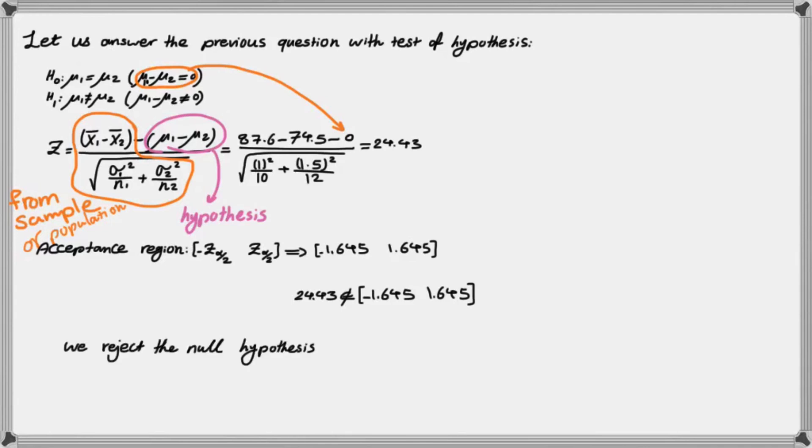We also got the same conclusion previously, right? So when we tested using confidence interval, we saw that zero doesn't fall between 12 and 14 that we calculated for our confidence interval. Well, also here, the value of z statistic doesn't fall into this region. So therefore, we end up rejecting the null hypothesis. So if you do it right, you always have to get the same conclusion, whether you use the confidence interval or you use the hypothesis testing.